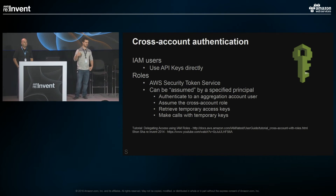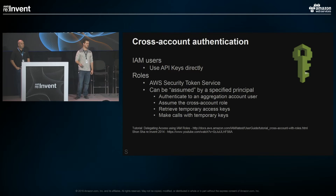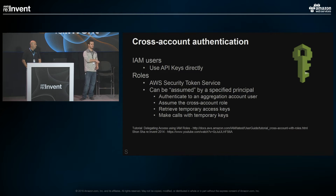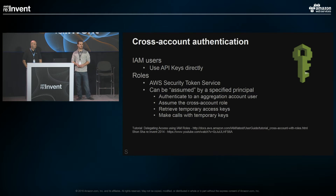One key discovery was IAM roles versus users. IAM users represent an entity with a name and API keys that need to be rotated. Roles, however, don't have a credential — instead, a role permits some other entity, termed a principal (like a different user, a different role, or an IP address), to assume that role and gain its privileges. If I'm authenticated to a user in a different AWS account and a role has been set up to allow me to assume it, I can request temporary tokens into the other account and take actions without owning or rotating API keys. It's an elegant way of setting up access without requiring keys.